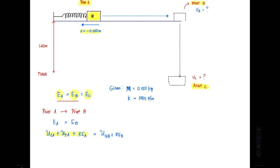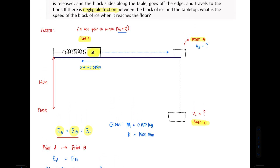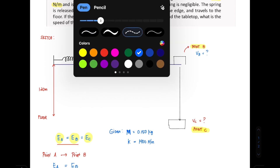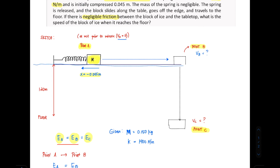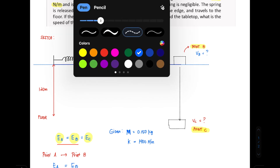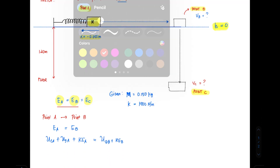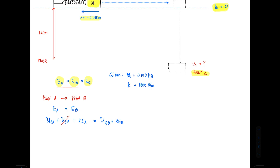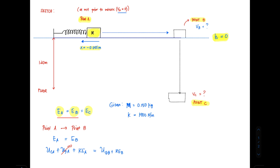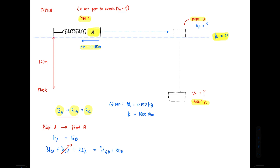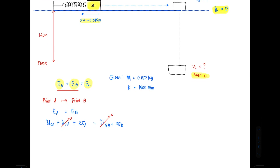To simplify this equation, remember that in gravitational potential energy you have the freedom to set where h equals zero. I strategically set h = 0 at the tabletop level. This makes the gravitational potential energy at point A equal to zero, and the gravitational potential energy at point B also equal to zero, since both points are on the table. So be strategic in where you set your h = 0.